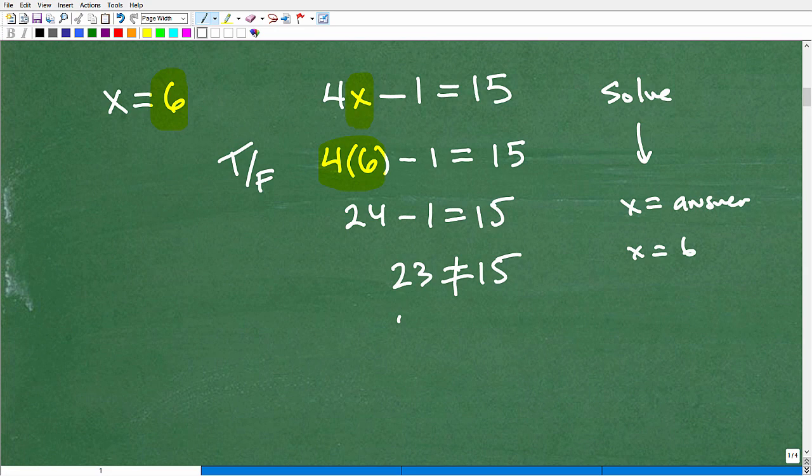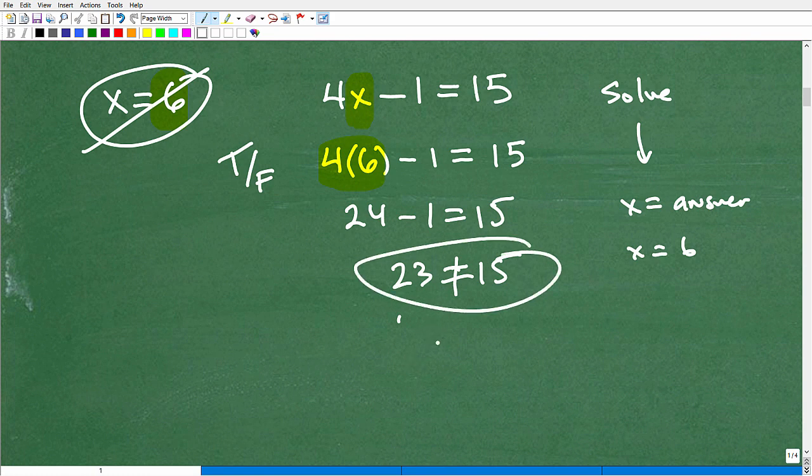Therefore, x equals 6 is not the solution. So, in mathematics, oftentimes, you won't have to know how to solve an equation. We didn't go through the process here. You need to check to see if something is, in fact, the solution or not. And the way you do it is exactly the way I just showed you. You just plug that value in, and then you look to see, at the end result, if the left-hand side is equal to the right-hand side. If it is, then, in fact, that number was the solution.